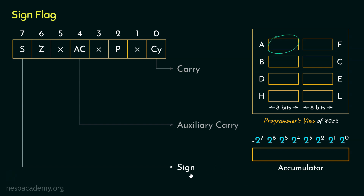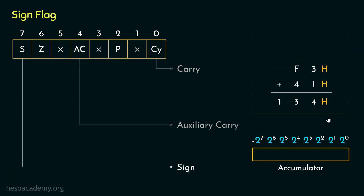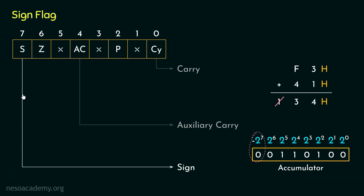Let me show you how the sign flag is affected using the previously done calculations. Consider the first addition. The carry is stored separately via the carry flag, so within the accumulator, the value 34 hex is stored in binary: 4 is 0100, and 3 is 0011. Notice the sign bit — the most significant bit — is 0. Therefore, for this particular addition, after the value is stored in the accumulator, the sign flag will not be raised; it is reset to 0.